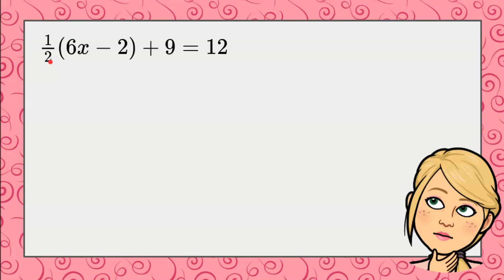We're first going to use the distributive property to distribute the 1 half to the 6x and the negative 2. Remember, there's an invisible multiply. So 1 half times 6x is 3x, 1 half times negative 2 is negative 1.